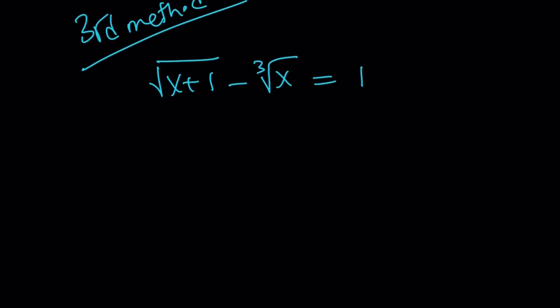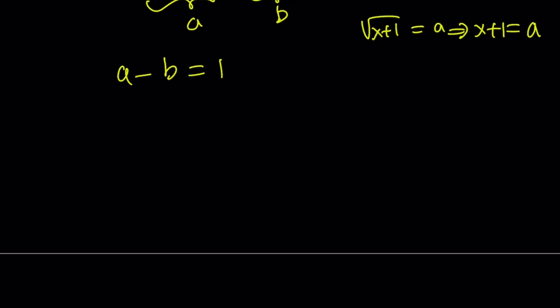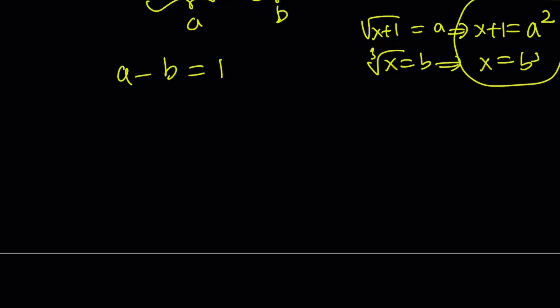I'm going to use substitution, but this time with two variables. I'll call square root of x plus 1 as 'a' and cube root of x as 'b'. So a minus b equals 1 automatically. Also, square root of x plus 1 equals a implies x plus 1 equals a squared, and cube root of x equals b implies x equals b cubed. These two expressions differ by 1, so a squared minus b cubed equals 1. So I get a system in two variables, which I can solve by substitution.